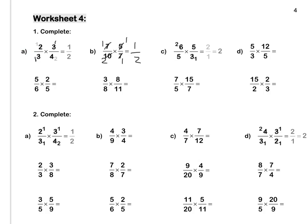Press pause to complete A and B by yourself. Question C: we simplify by dividing by 5 and 5. Then for our 6 and our 3, we divide by 3 to get 2, and divide by 3 to get 1. We multiply out and we get 2 over 1, which is equal to 2 wholes. Press pause to complete questions C and D by yourself.